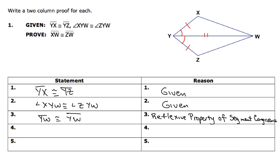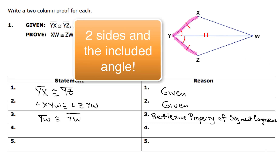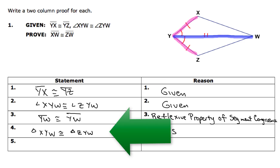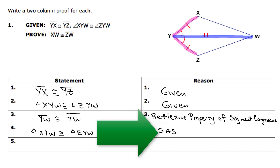Now that I've got that, I want to analyze my diagram a little bit. I've got two sides and an included angle of a triangle congruent to two sides and a congruent angle in another triangle. This piece is congruent to this piece, my two angles are congruent, and this piece is congruent to itself. So using the side-angle-side congruence postulate, I'm going to have triangle XYW congruent to triangle ZYW, and the reason is side-angle-side congruence postulate.